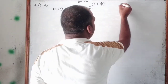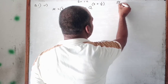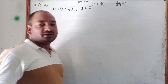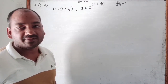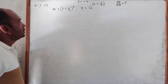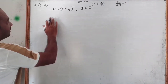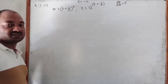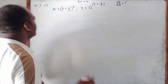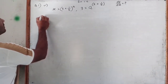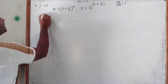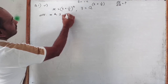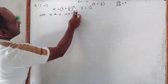So in this we have to find the value of dy upon dx. dy upon dx is what we have to find here. So first, in this we differentiate x and y both with respect to t. So first, differentiate x and y with respect to t.